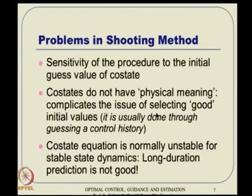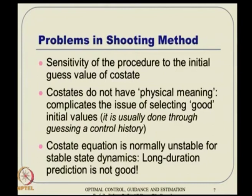The difficulty is that typically the costate equation is an unstable equation and we are integrating it forward, so we have sensitivity issues. The solution is sensitive to the initial guess value of the costate. Also, we cannot have a good guess of the costate because costates typically do not have physical meaning. Even though there is a mathematical meaning — in dynamic programming sense, lambda is del J by del x, the gradient vector of optimal cost — that does not help much in guessing a number for the initial costate condition.